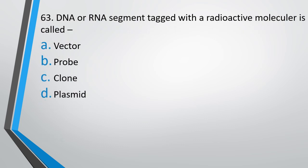Question number 63: A DNA or RNA segment tagged with a radioactive molecule is called as: vector, probe, clone, or plasmid? The correct answer is option B — it is called a probe.